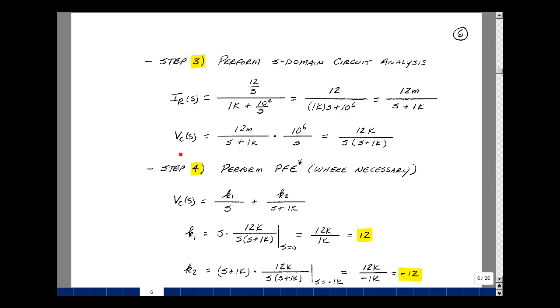Now the voltage across the capacitor would just simply be this current times the impedance of the capacitor. So multiplying these two, 12 times 10 to the minus 3 times 10 to the 6th, 10 to the 3, and then S times S plus 1k. Step 4 in the algorithm will be to perform a partial fraction expansion, if it's necessary.